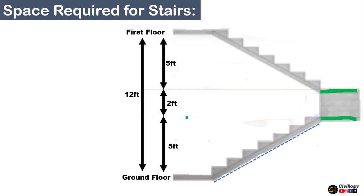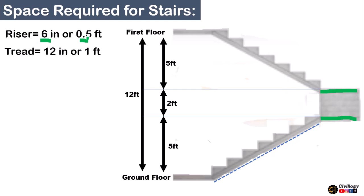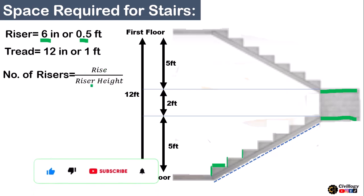As of now, we are discussing the space requirement. As per standards, we are assuming the riser is 6 inches or 0.5 feet and the tread is 12 inches or 1 foot. The riser is the vertical portion of the step and the tread is the horizontal portion. To calculate the number of risers, we will use the formula: rise divided by riser height.